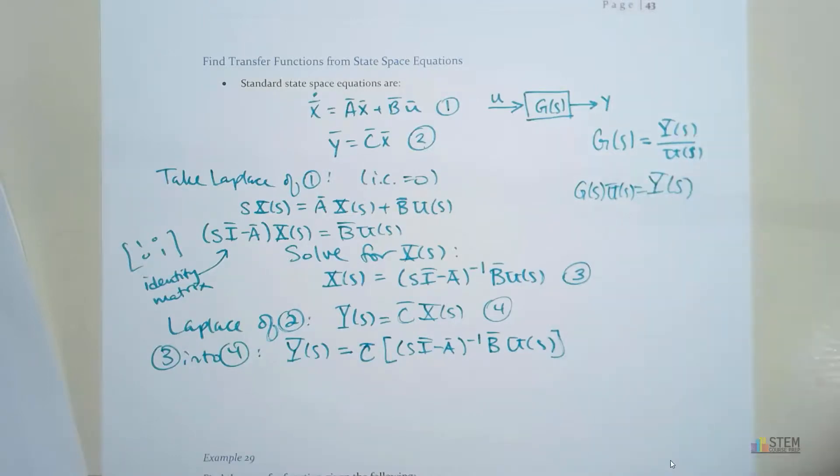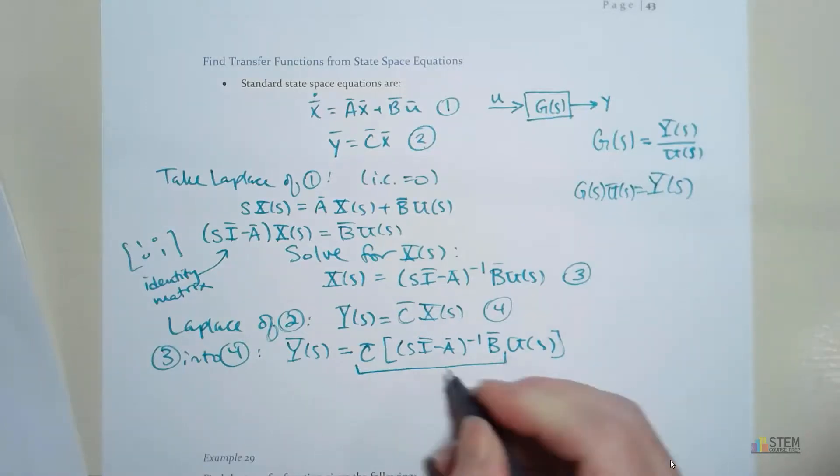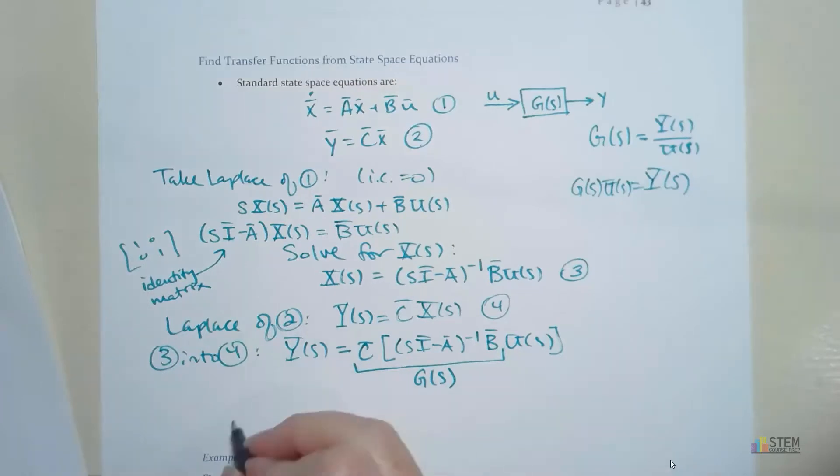All right. Now if that's the case let's compare it to what we have here. We've got Y we've got U so all of this stuff here has to be G of S. Okay. So that's going to give you your equation.